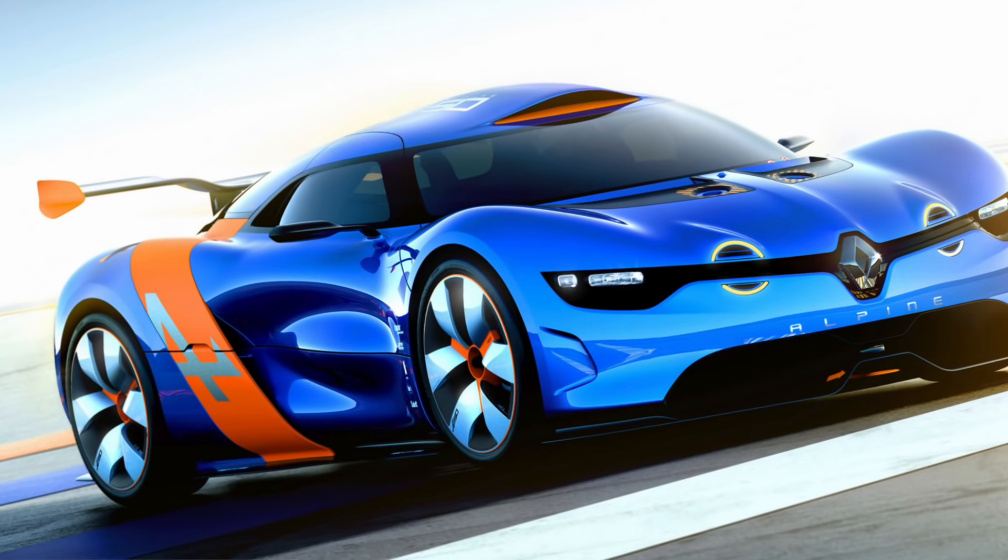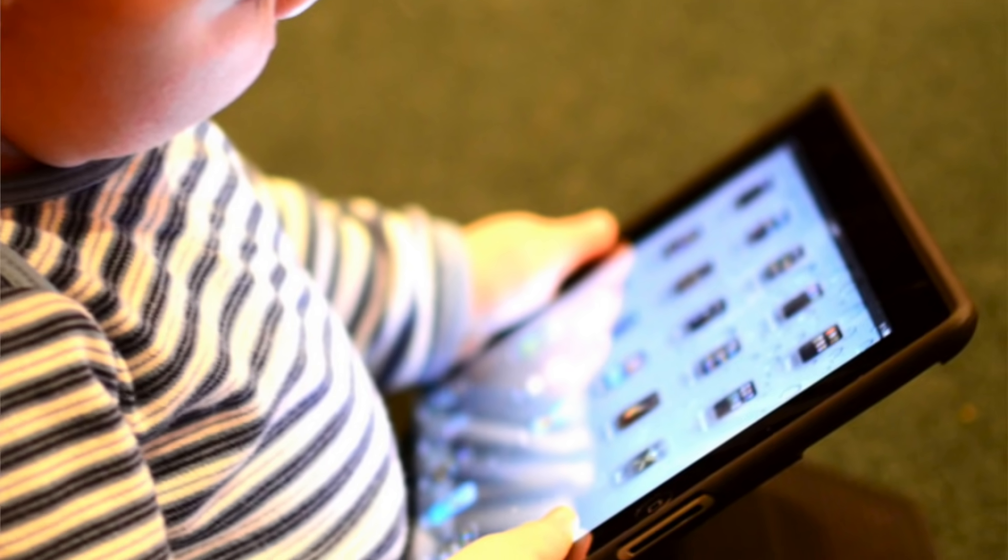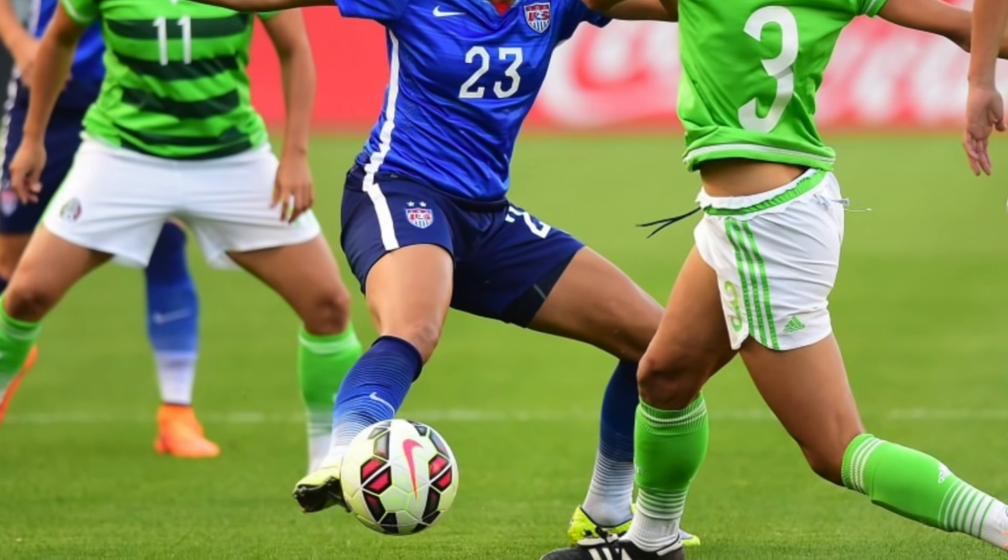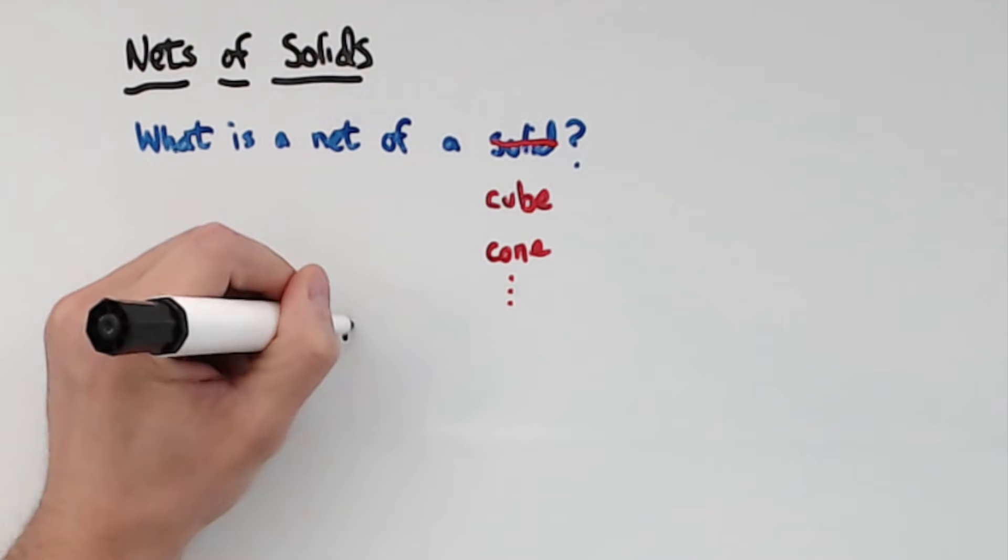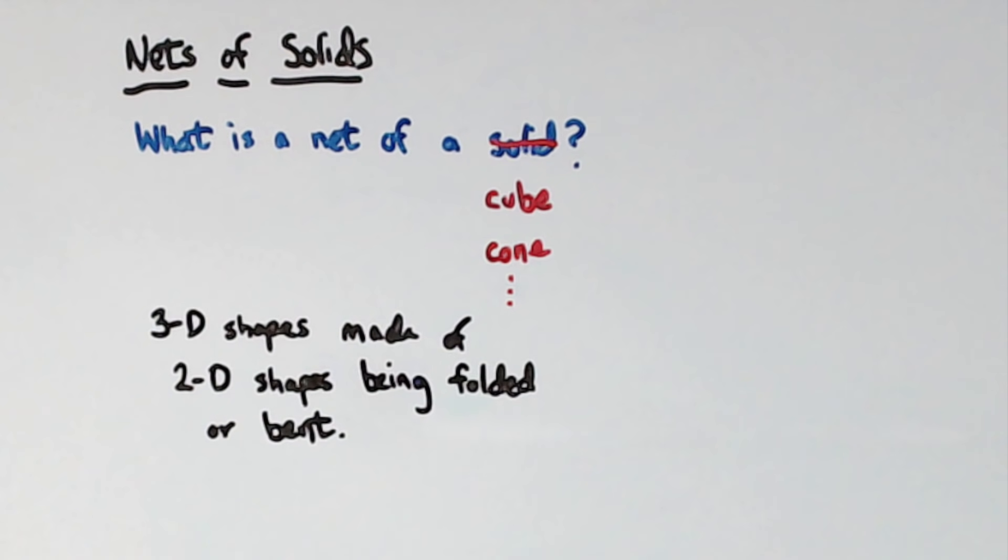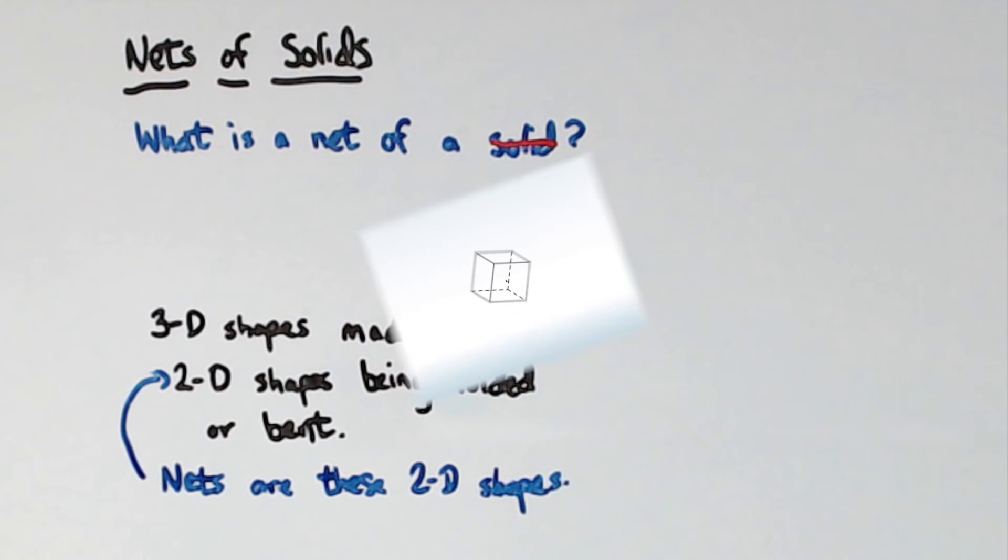We deal with so many different shaped solids in our daily lives. Every one of these shapes has something in common. They are all 3D or three dimensional. Another thing they all have in common is that these 3D shapes are all made up of 2D shapes that are either being folded or bent. The 2D shapes that make the 3D shapes are what's called nets.